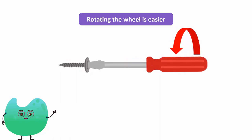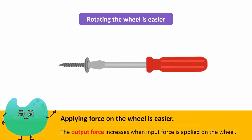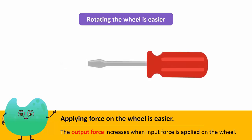So when we want to apply less force, we apply the force on the wheel rather than the axle. We can also use a wheel of greater diameter according to the requirement of the task.